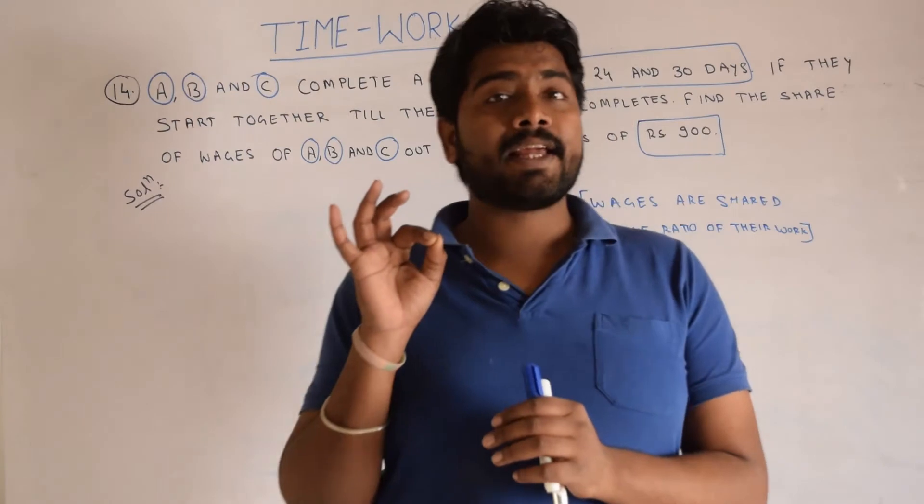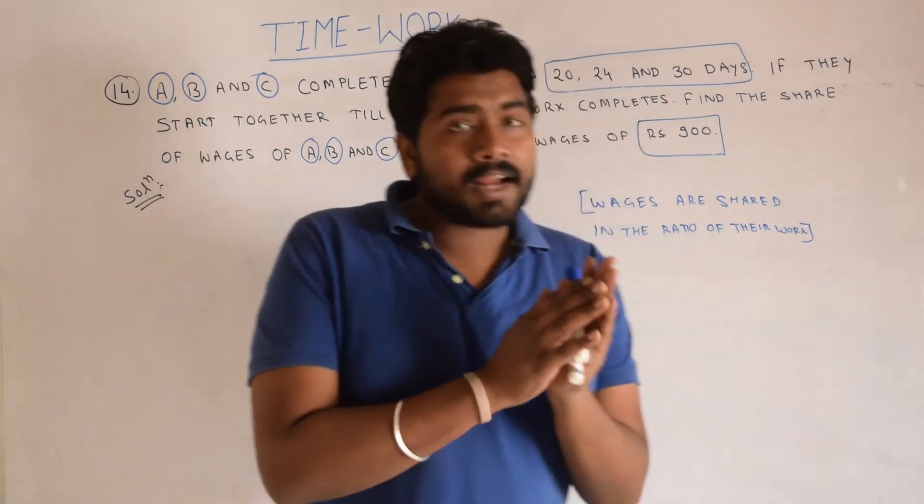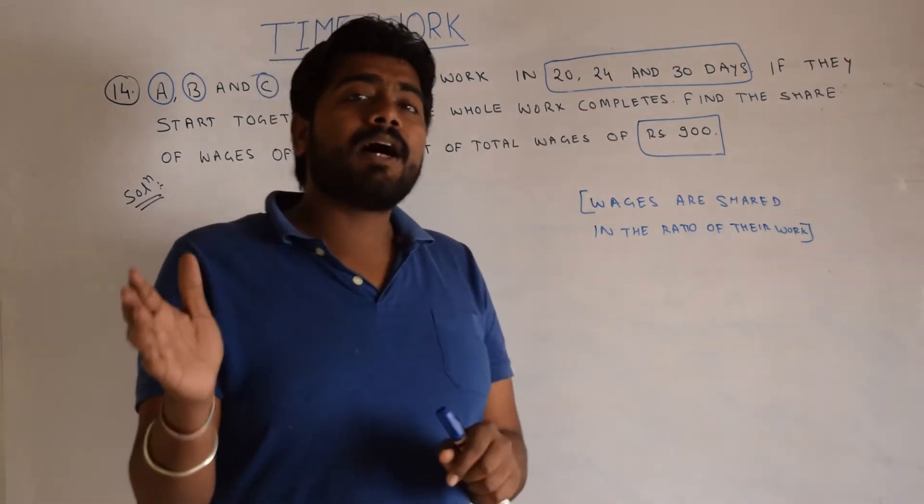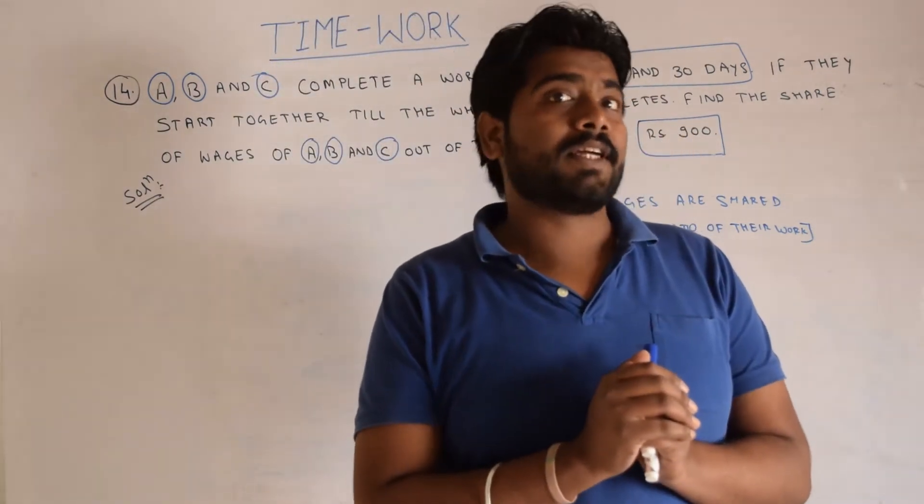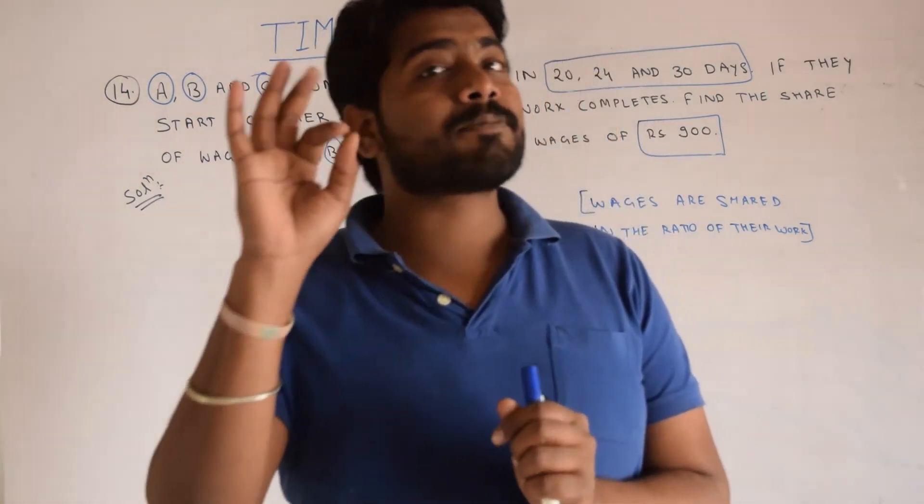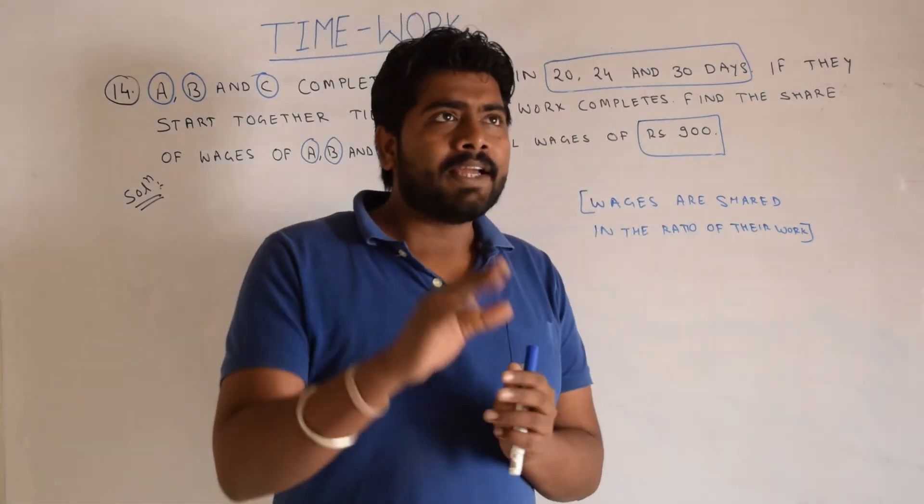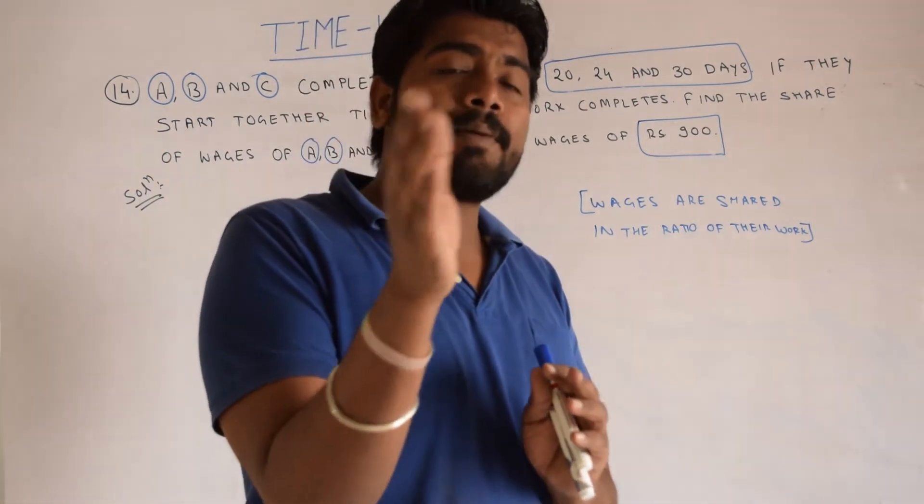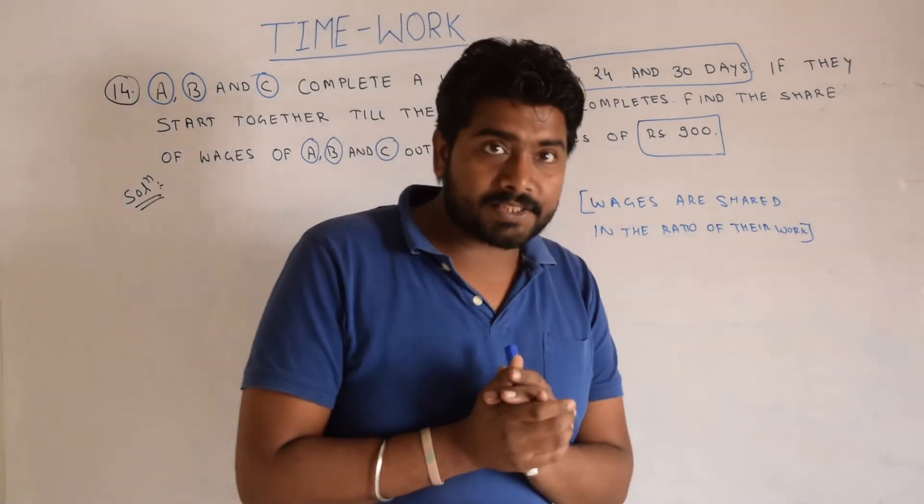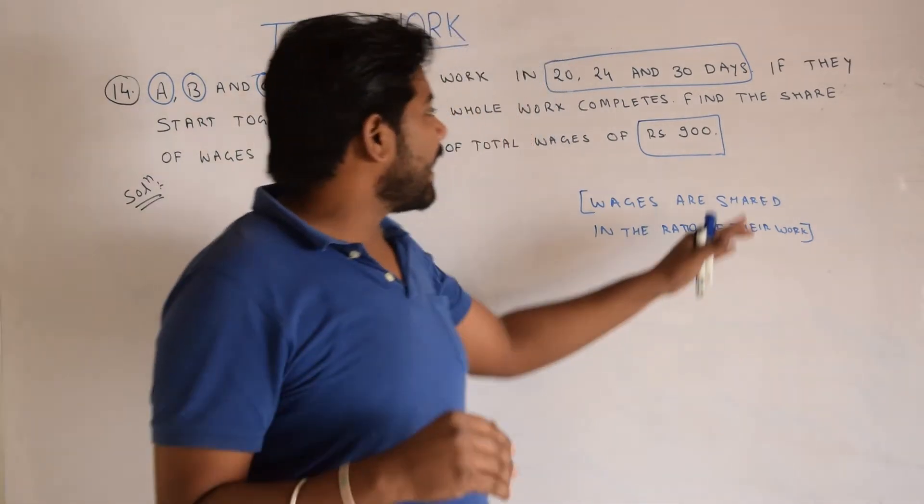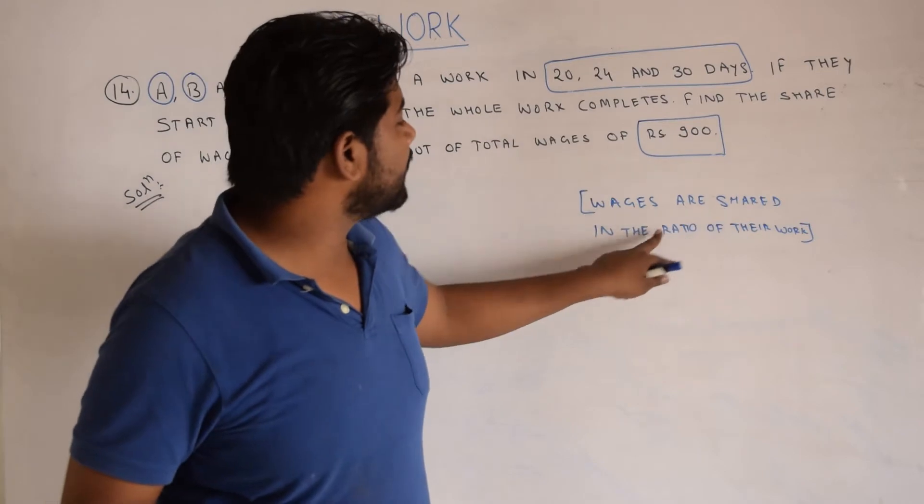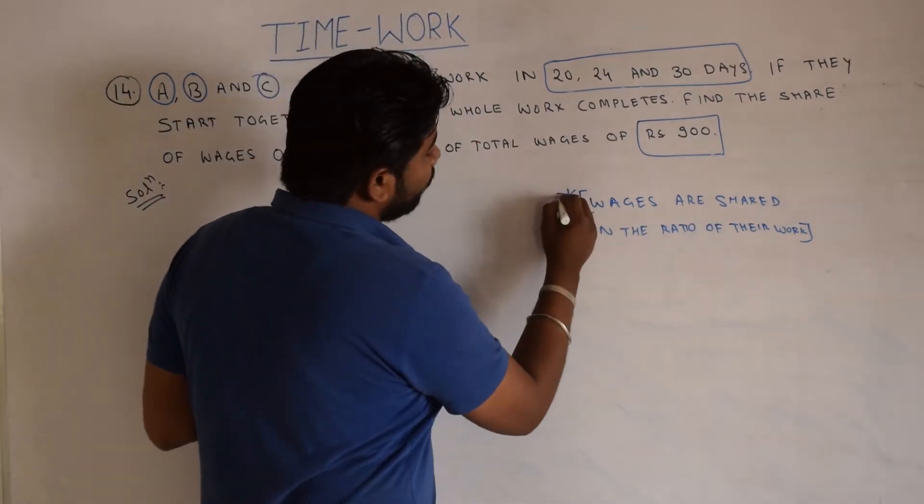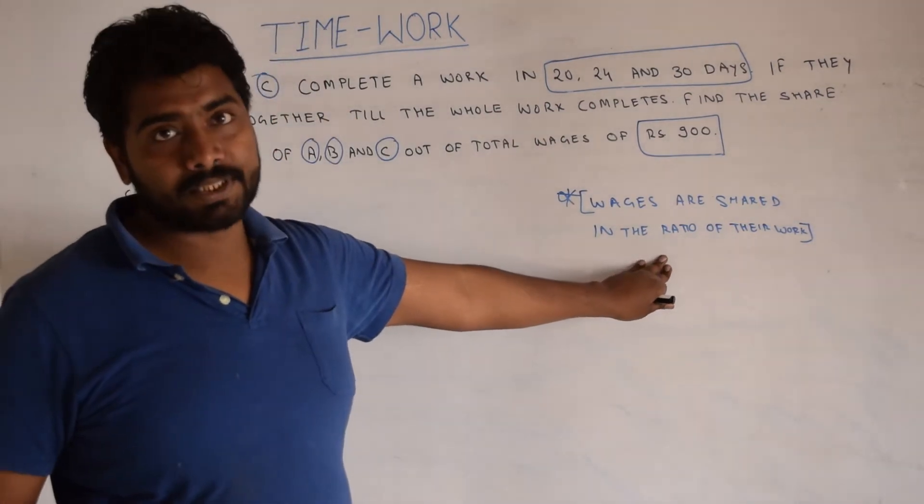This question introduces a new concept. If you get some amount of work to do and you get 2 or 3 people to get that work complete, which amount of work will you share? If there is an assignment and two of you are doing the assignment, which number of pages will you write? You will share the same amount of work. Right now in this same, wages are shared in the ratio of their work. You write this separately: wages are shared in the ratio of their work.